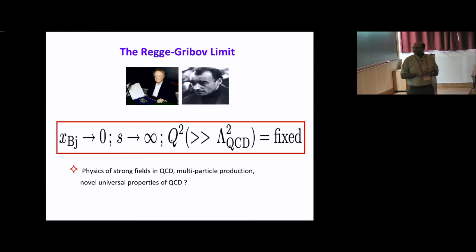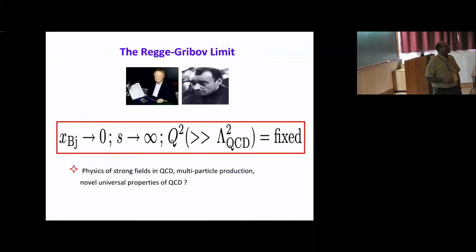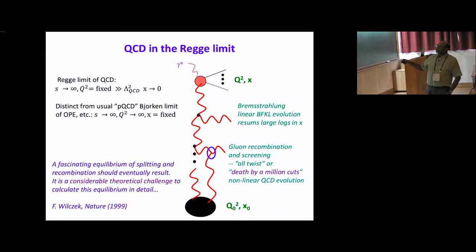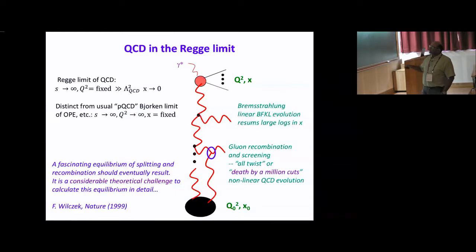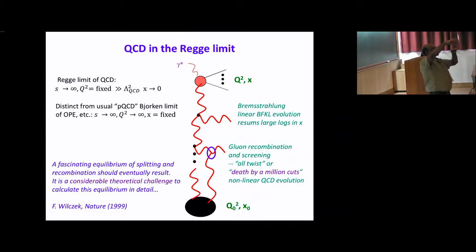This regime is the physics of strong fields in QCD and multi-particle production, with yet-to-be-discovered possibly universal properties of the theory. If you're interested in these problems — not precision physics necessarily — it may be more effective to formulate your thinking in the Regge limit. Here, Q² is fixed, S increases, x goes to zero, and you're keeping the momenta of these partons fixed while increasing the energy.